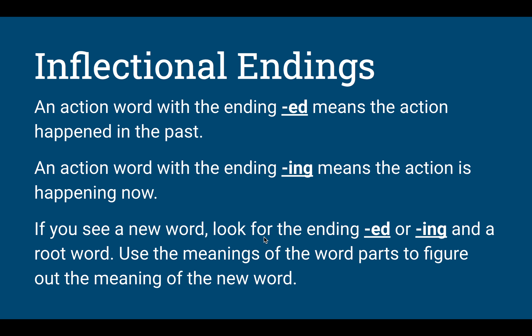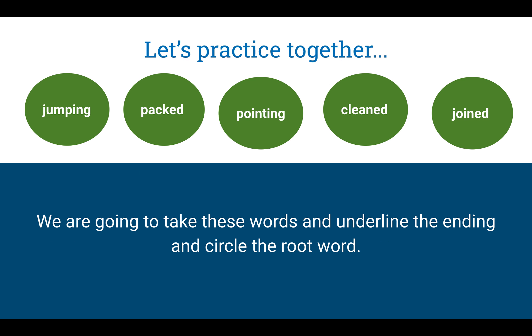Now this is a review, friends. Remember our inflectional endings — ED makes three sounds and he travels in the past. So if he's on the back end of a word, that means it's in the past. An action word with the ending ING means that action is happening right now. Let's practice together. Our first word is jumping. We're going to underline the root word and underline the ending that we added. In jumping, my root word is jump, and the ending that we added is ING. That means you are jumping right now — the action is taking place right now.